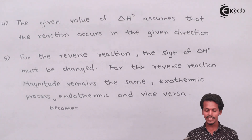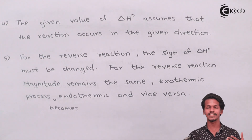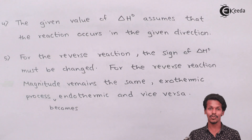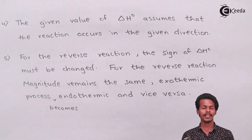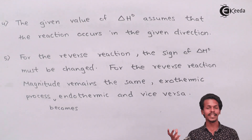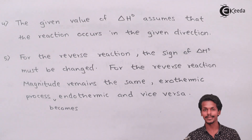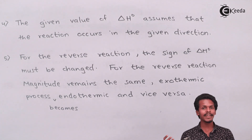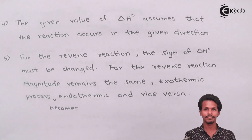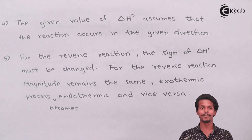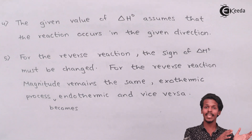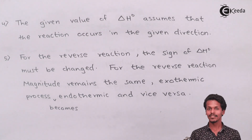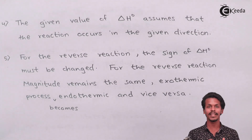Guideline four: the given value of ΔH° represents the standard enthalpy of reaction and assumes the reaction occurs in the given direction. So whenever a reaction is written and ΔH is shown on the right with a positive or negative value, this indicates the reaction proceeds as written. For example, if A + B gives C + D and ΔH = +20 kJ, this +20 kJ applies only when A and B are converted to C and D.